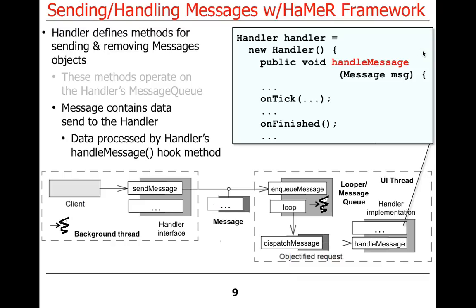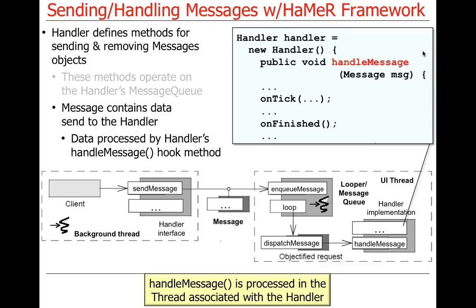The data in a message is processed by the handleMessage hook method. handleMessage is processed in the thread associated with the handler. By default, a handler belongs to the thread where it's created, using the magic of thread-local storage - the thread-specific storage pattern. You can also create a looper for a background thread and give that to the handler if you want things to run in the background. There's a cool idiom used with the Android IntentService for passing messages between separate threads.